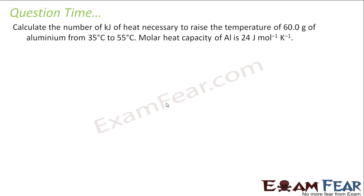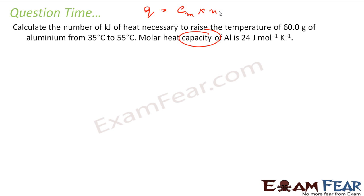Calculate the number of kilojoules of heat necessary to raise the temperature of 60 grams of aluminium from 35°C to 55°C. The molar heat capacity of aluminium is 24 J/mol·K. First, find the number of moles: aluminium has a molar mass of 27 g/mol, so 60 g gives 60/27 = 2.22 moles.